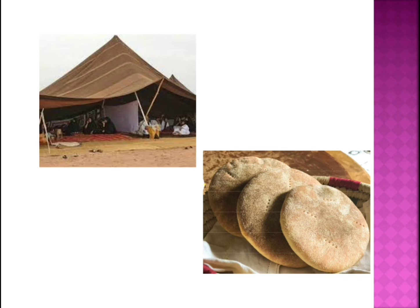Nowadays, people are growing some crops that require very little water, like wheat, pulses, and barley — but near to the oasis, so that the small amount of water needed for farming can be obtained from the oasis. That is about farming in this region.